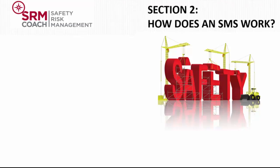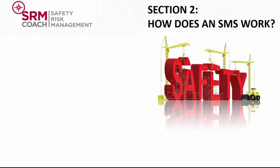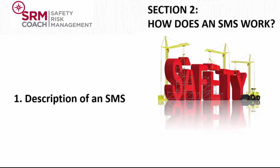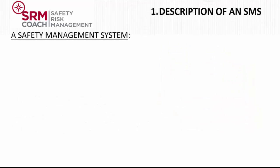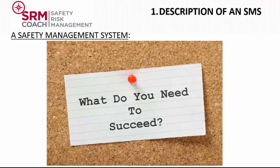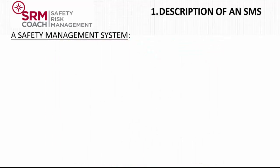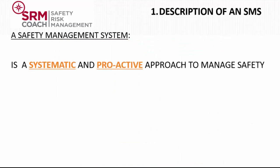Section 2 is a rather brief bridge to explain how an SMS works. We describe an SMS, then we go into risk-based decision making and make a simple model of safety risk management. Based on the previous section, we can describe what the safety management system should look like. First of all, it should be a systematic and proactive approach to managing safety.